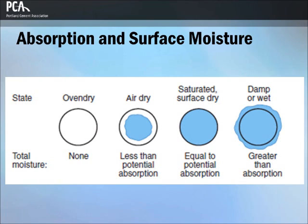Coarse and fine aggregates will generally have absorption levels — moisture contents at SSD — in the range of 0.2% to 4% and 0.2% to 2% respectively. Free water contents will usually range from 0.5% to 2% for coarse aggregate and 2% to 6% for fine aggregate.